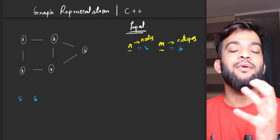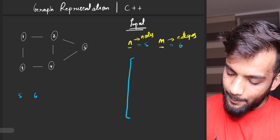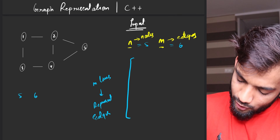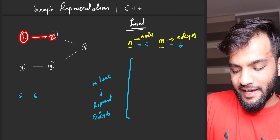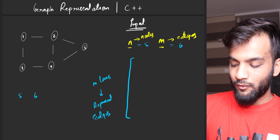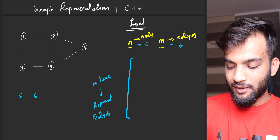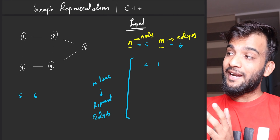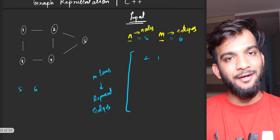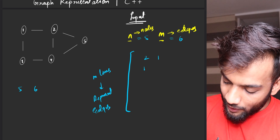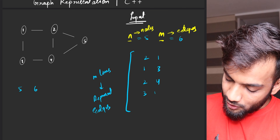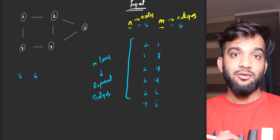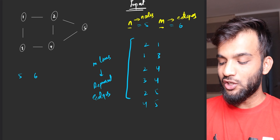In the next line they will give you m lines representing edges. For example, if there is an edge between one and two, the input might say '1 2' or '2 1' — either way. We assume there is an edge between one and two and also between two and one. There is an edge between one and three, two and four, three and four, two and five, and four and five — all six edges, given in any order.